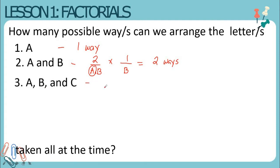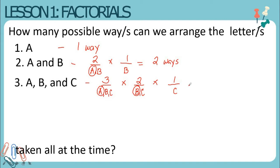Number three: letters A, B, and C. Since we have three letters to be selected, we are going to have three lines. On the first line we can select A, B, or C, so we have three options. If we have chosen letter A, we have only B and C to choose from, so we have two options. If we have chosen letter B, we only have letter C left, so we have one option. Multiplying: three times two times one is equal to six, so there are six possible ways to arrange letters A, B, and C taken all at a time.